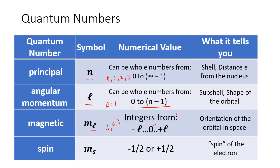The last quantum number is the spin quantum number, m_s. Spins can only be one of two values: negative one-half, representing spin down (shown with a down arrow), or positive one-half, called spin up (shown with an up arrow). This simply tells us the spin of the electron.